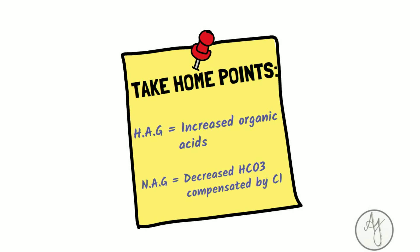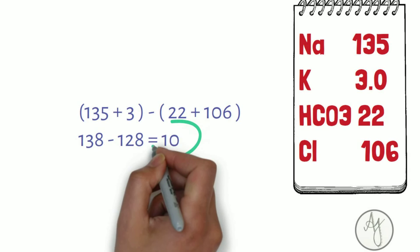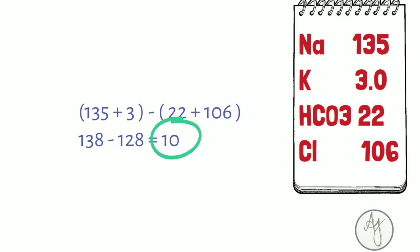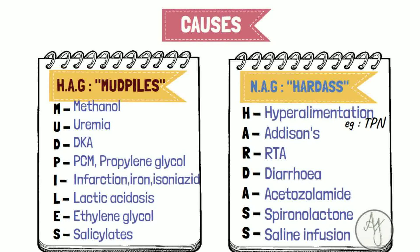Here's an example to solve — you have 10 seconds. The anion gap calculated is 10, which is within the normal range. For causes, here are a couple of slides with the well-known mnemonics that you can screenshot and memorize.